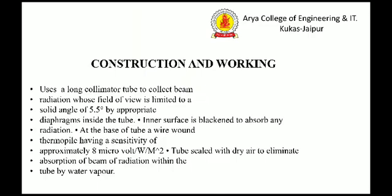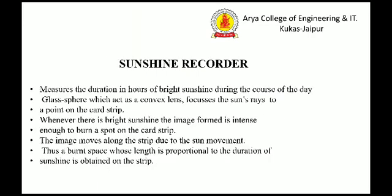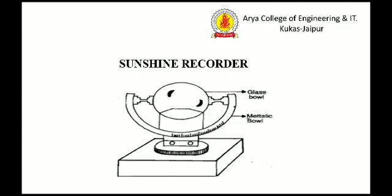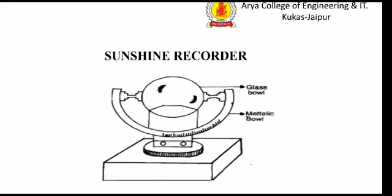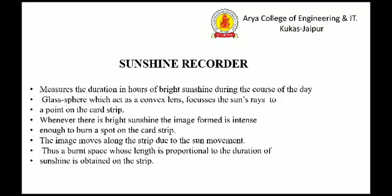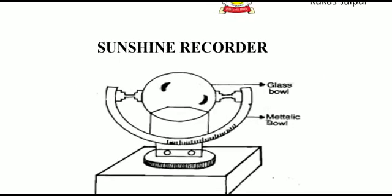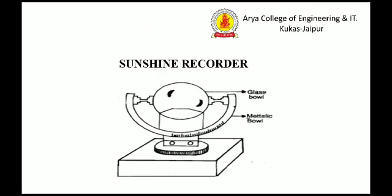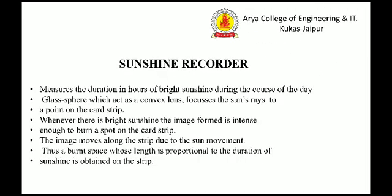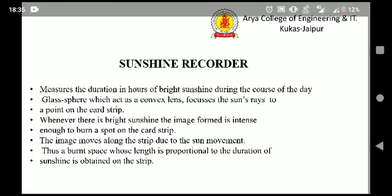The sunshine recorder measures the duration in hours of bright sunshine during the course of the day. A glass sphere acts as a convex lens to focus the sun's rays to a point on a card strip. Whenever there is bright sunshine, the image formed is intense enough to burn a spot on the card strip. The image moves along the strip due to the Sun's movement, creating a burnt trace whose length is proportional to the duration of sunshine.